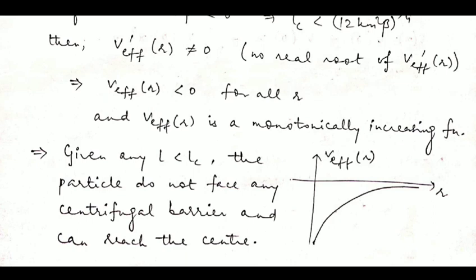As you can see, for this effective potential there is no barrier which the particle faces. Therefore, for any L less than this critical value LC = (12Km²β)^(1/4), the particle does not face any centrifugal barrier and can reach the center.